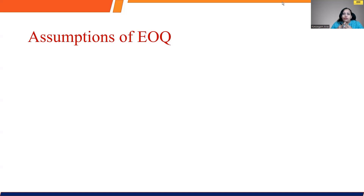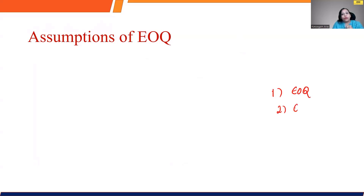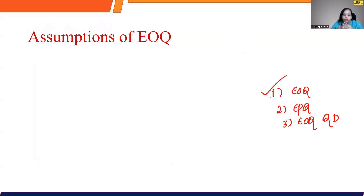The most important decision we want to make is when to order and how much to order. We have three important models. One talks about economic order quantity, the second one talks about economic production quantity, and the third one talks about economic order quantity with quantity discounts. In this specific video, I will be walking all of you through on economic order quantity.